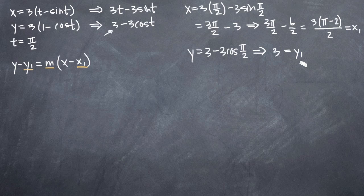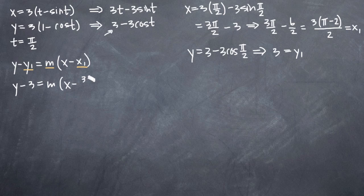Now that we have these two points, we can plug them into our point-slope form for the tangent line. So we'll get y minus 3 equals m times x minus 3 times (pi minus 2) all over 2. Now what we need to find is m, so we need to take the derivative of our parametric curve.